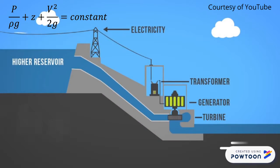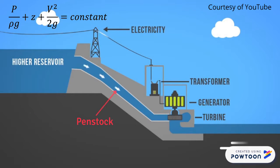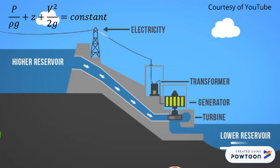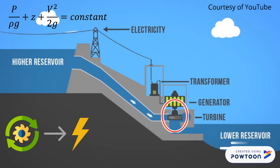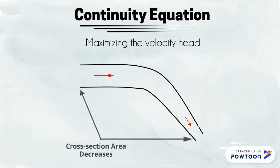During the operation of a hydropower dam, water flows to lower levels through pentstocks with turbines at the end. As the water level drops, the sum of velocity head and pressure head increases due to Bernoulli's equation, and electricity is generated when water turns the turbines. To maximize the velocity head, the cross-section area required is decreased along the pipe.